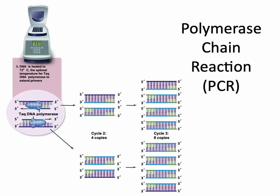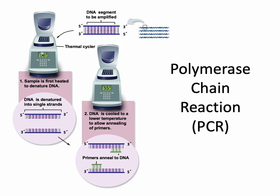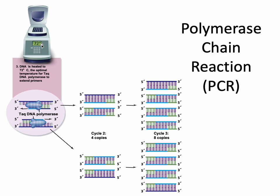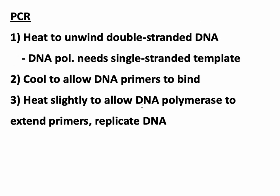Next, step three: we heat slightly — around 72 degrees Celsius, warmer than step two but not as warm as step one. This allows DNA polymerase to do its job. It takes these primers and extends them, building DNA in the five-prime to three-prime direction. This doesn't take very long since you're only building one gene's worth of DNA. Step three: heat slightly to allow DNA polymerase to extend the primers and replicate DNA.